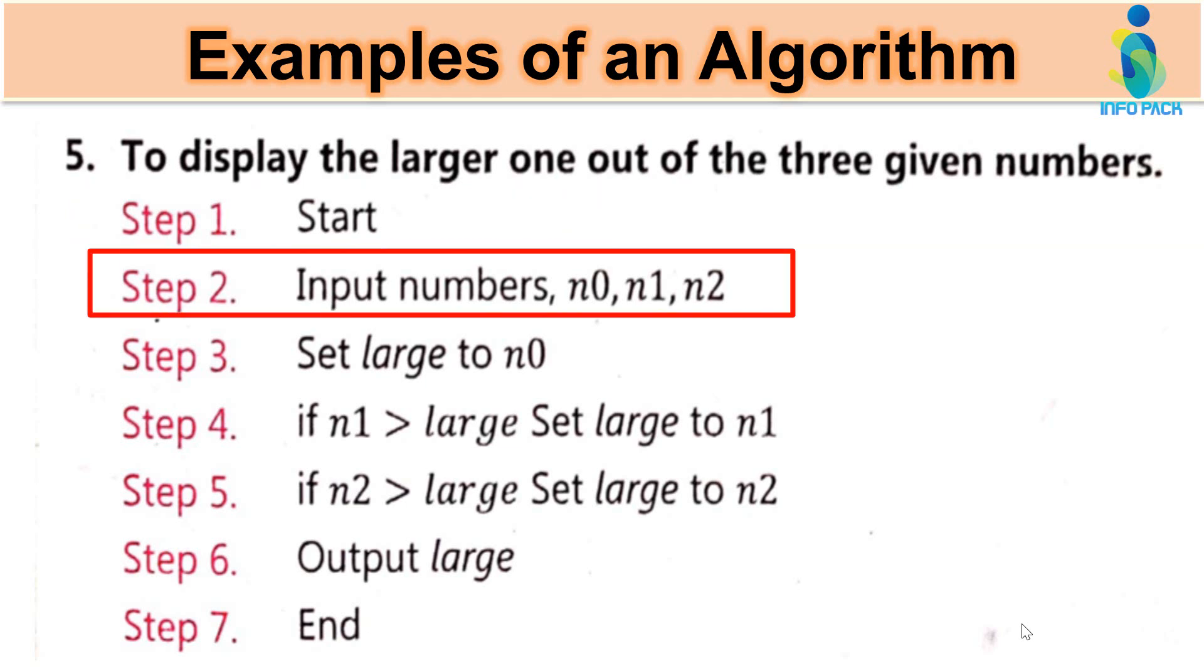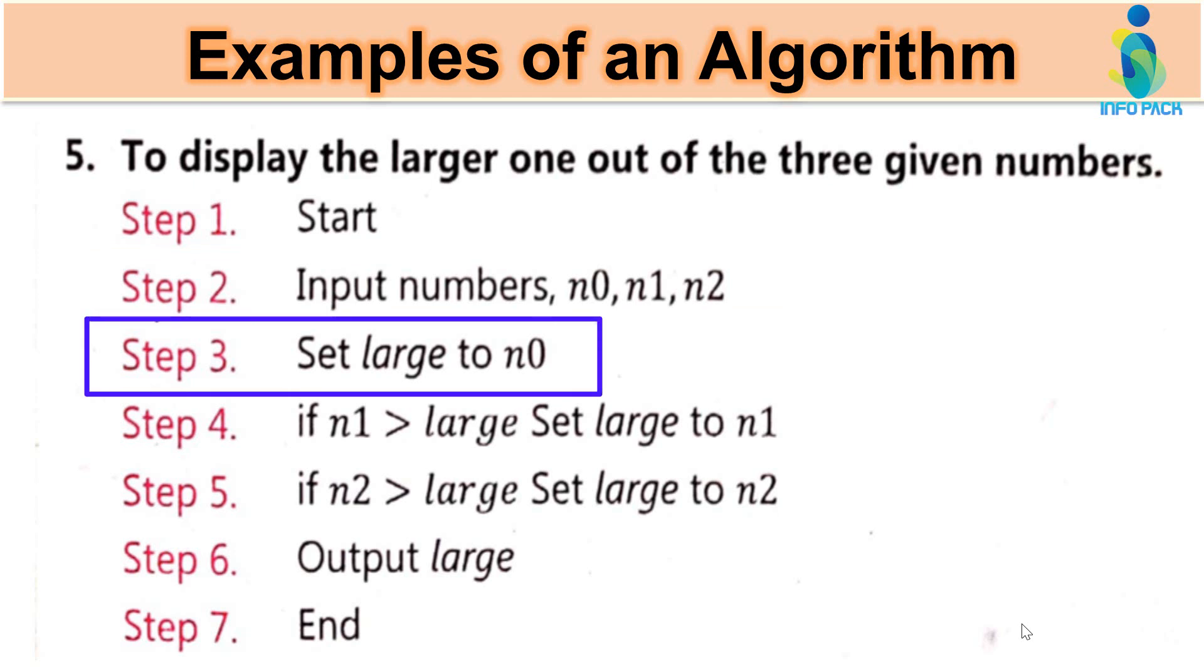So to start this algorithm in step one we have to write start and in step two we have to take three input numbers n0, n1, n2. And in step three set large to n0. What does it means by set large to n0 means large a variable lihaa aur uske andar n0 ko store kawa dihaa. Kyun store kawa hai? Kyunke hum us number ko compare n1 se after this n2.